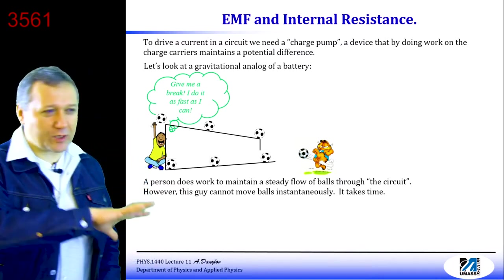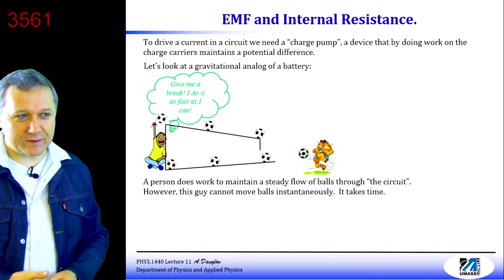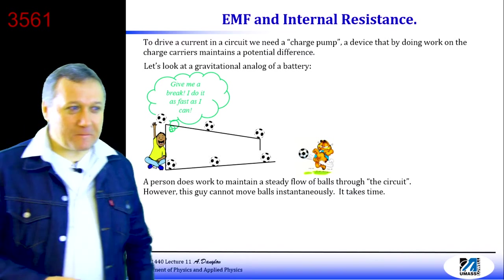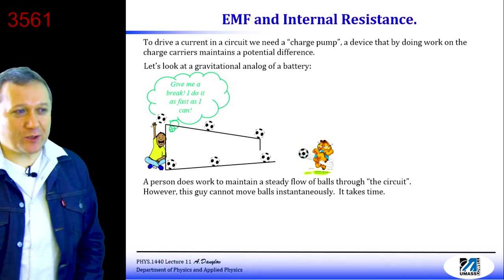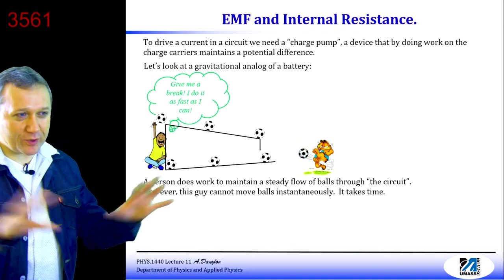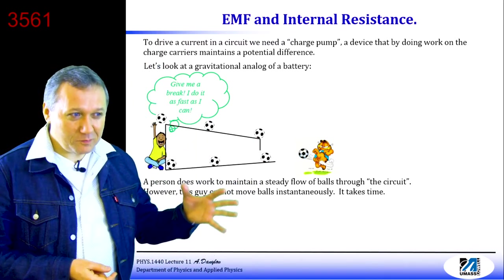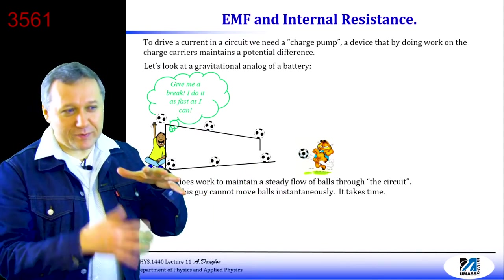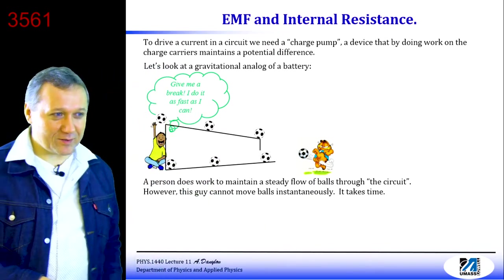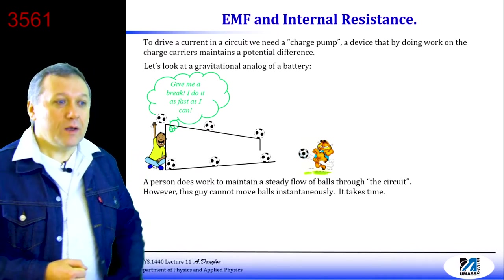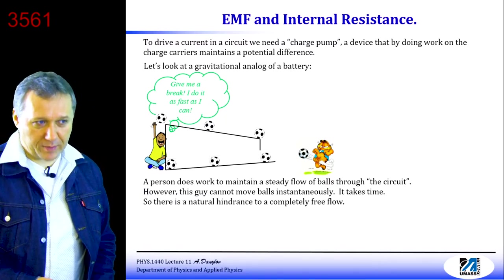In physics, researchers very often try to bypass all those complicated questions. In this case, researchers just said: let's introduce what is called the internal resistance — and we can measure it experimentally. As a result, all those tricky questions and complicated models are bypassed. It's sort of like sweeping them under the rug, but the rug must be a nice Persian one so that no one would even dare to lift it up. That's basically the logic behind the idea of introducing the internal resistance of the battery.